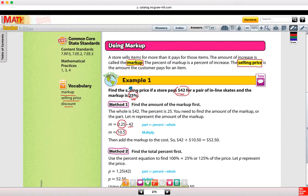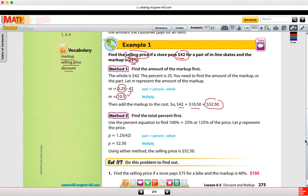Now, if it's asking for just the markup, you would say $10.50. But it's asking for the selling price. So what you need to do is take that $42 and add in the $10.50. So the selling price is $52.50. That's method one.